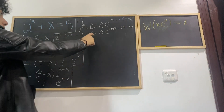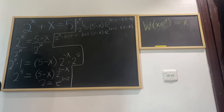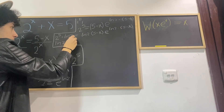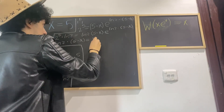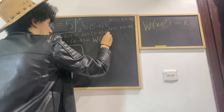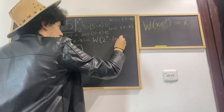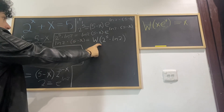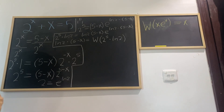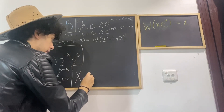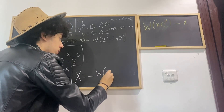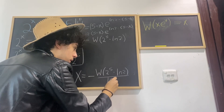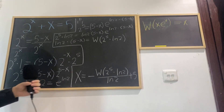Now we can apply the Lambert W function to both sides to isolate x. We get that ln 2 · (5 − x) = W(2^5 · ln 2). To solve for x, we divide both sides by ln 2, subtract 5, and multiply by negative 1, giving us: x = 5 − W(2^5 · ln 2) / ln 2.